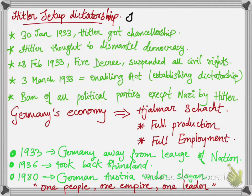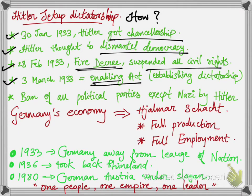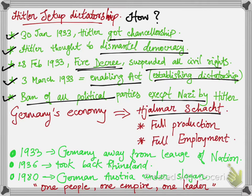On 30 January 1933, the President of Germany offered Hitler the position of Chancellor. Hitler then planned to dismantle democracy after gaining all powers. In February 1933, the German parliament was burned down, which helped Hitler achieve his goal. The Fire Decree of 28th February 1933 indefinitely suspended all civic rights — like freedom of speech and freedom of press. On 3rd March 1933, the Enabling Act was passed, establishing dictatorship. Hitler banned all other political parties except the Nazi Party. He then handed Germany's economy to Hjalmar Schacht, who aimed for full production and full employment.